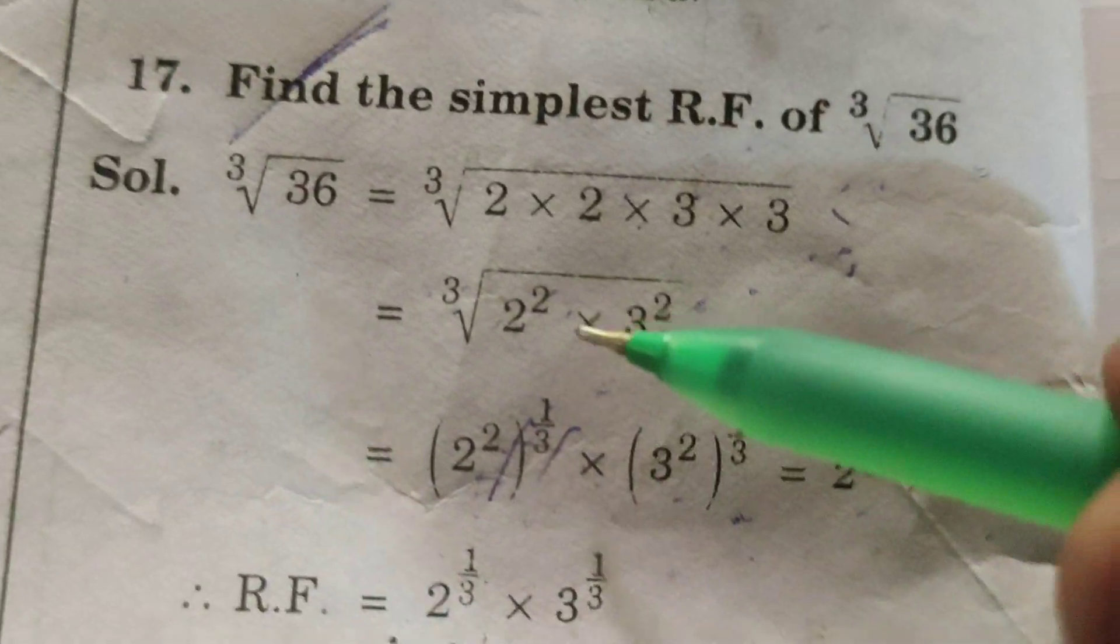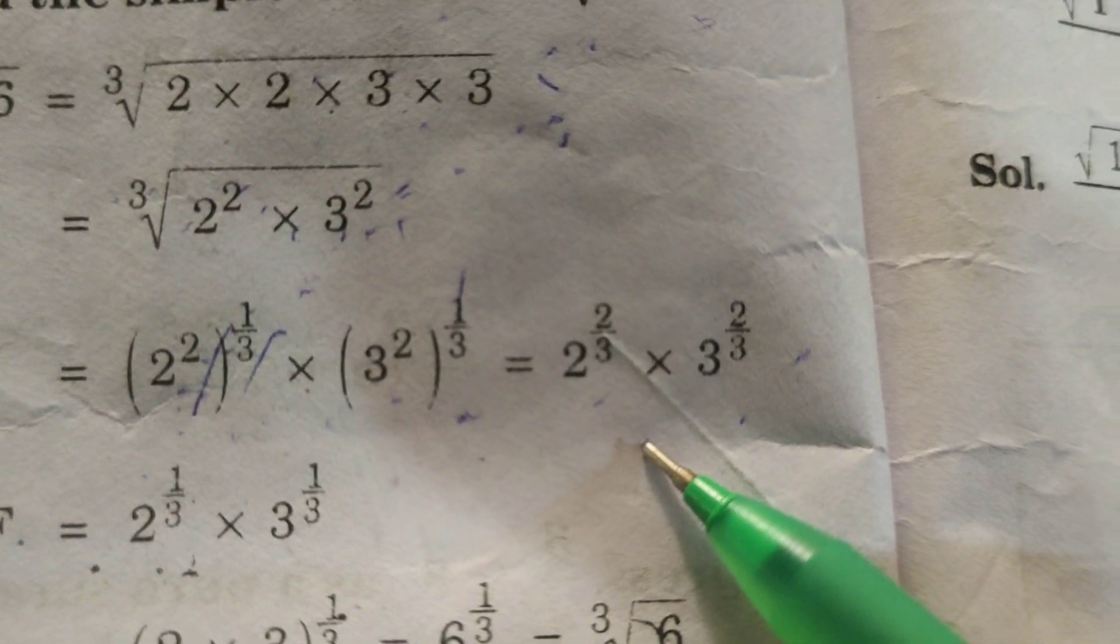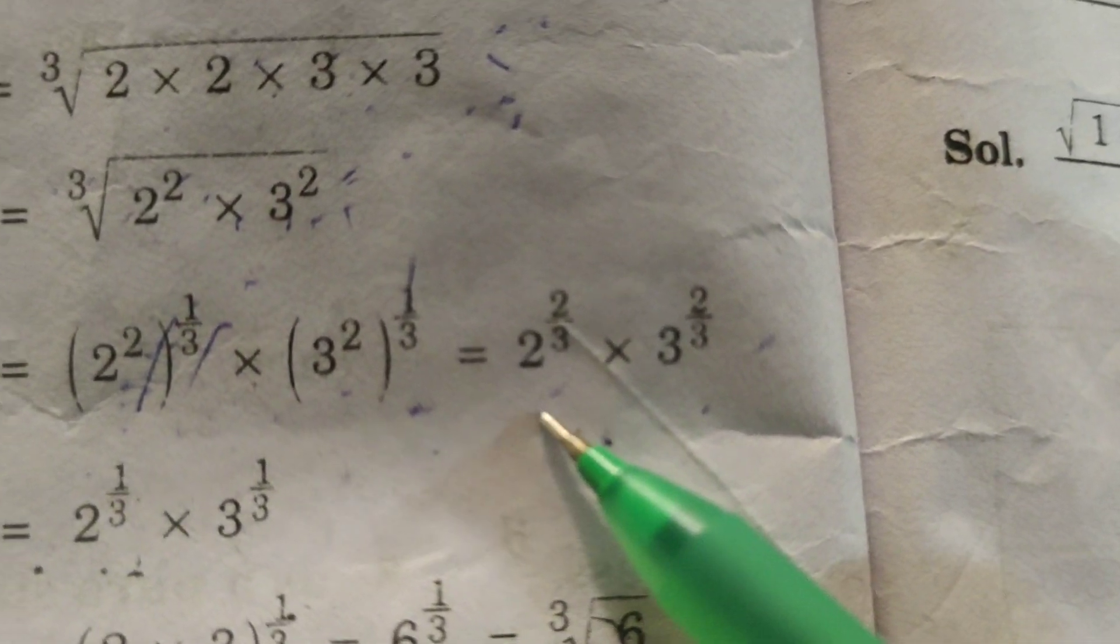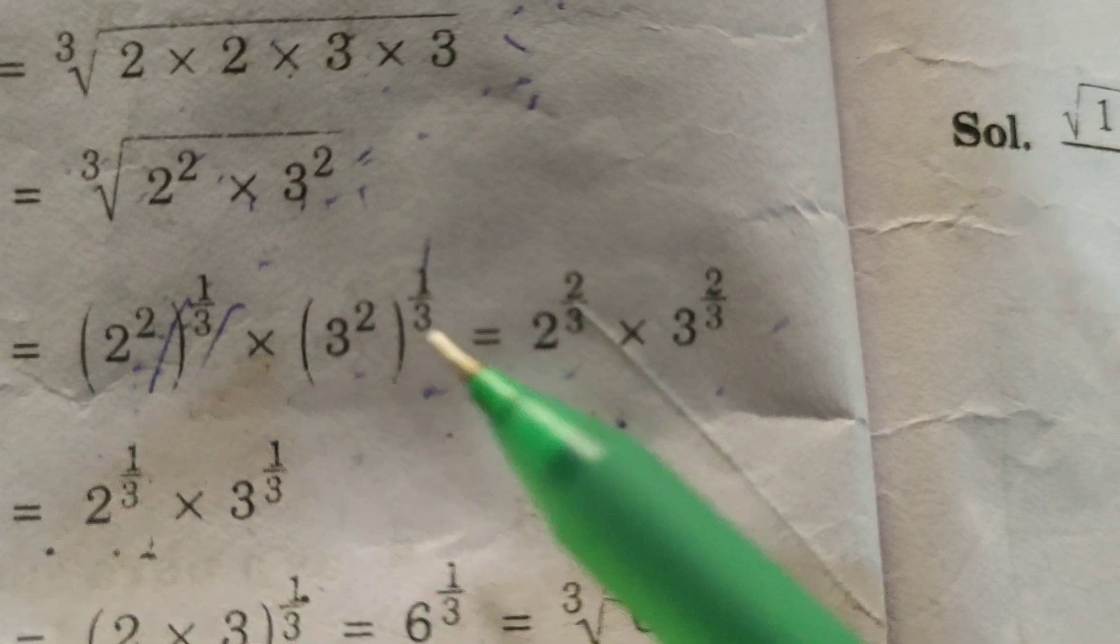The rationalizing factor of ∛36 equals 2^(1/3) × 3^(1/3).